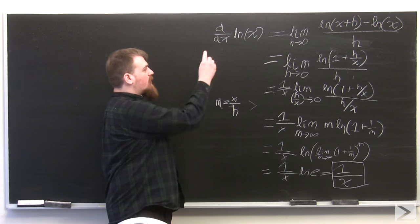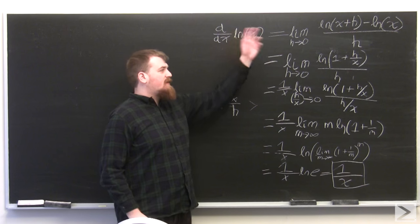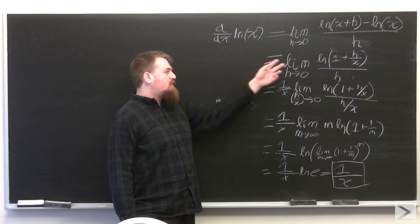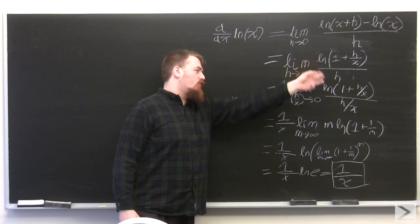By definition, the derivative of natural log is equal to the limit as h goes to zero of log of x plus h minus log of x. Using the subtraction rule, we get that this becomes log of 1 plus h over x.